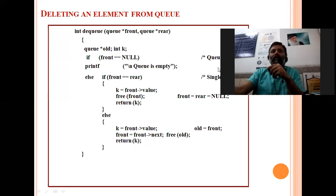We are checking here if front is equal to null. If queue is empty then definitely deletion cannot be done. So if front equals null, then printf queue is empty.